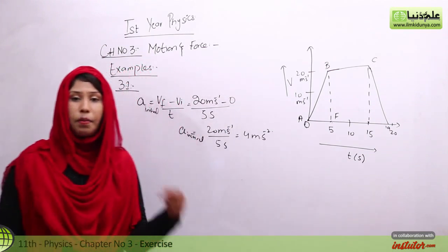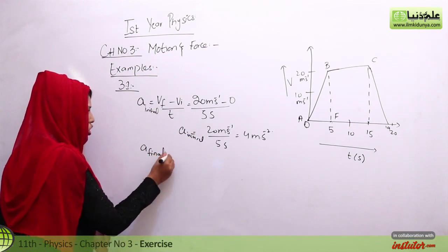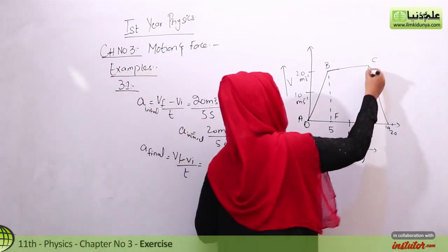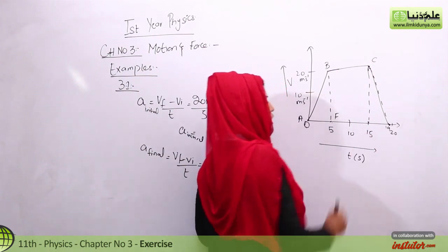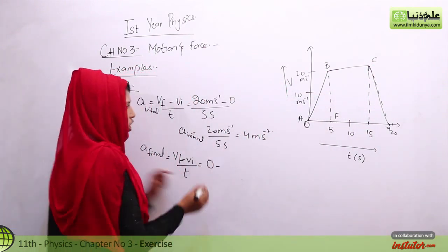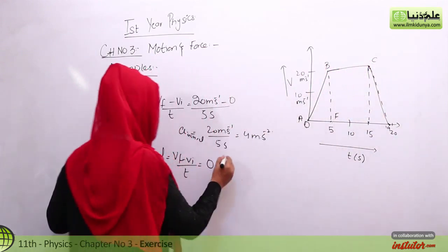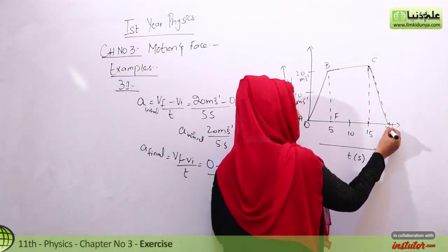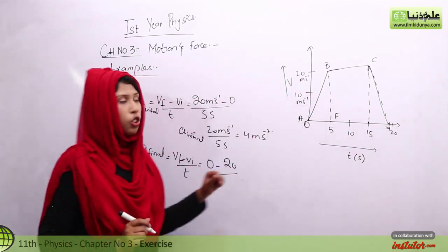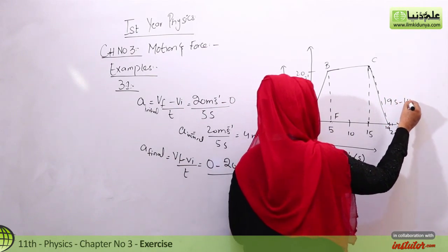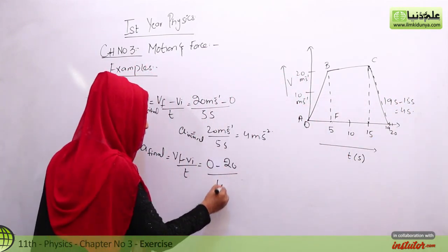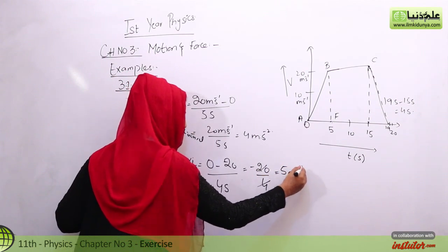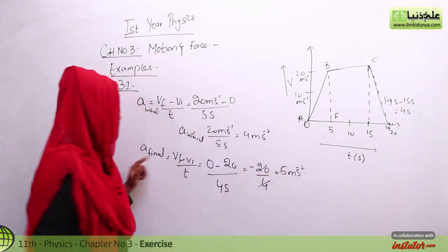Now if we have to find the final acceleration, the final velocity attained by the body at the last segment is zero, and the initial velocity looking at the last patch was 20 meters per second. The time is from 15 to 19 seconds, so the time difference is 19 minus 15 equals 4 seconds. Therefore, the final acceleration is minus 20 over 4, which gives us minus 5 meters per second squared.